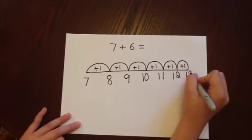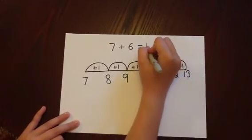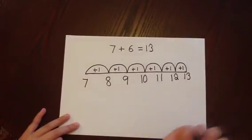Twelve add one is thirteen. The answer to seven add six is thirteen.